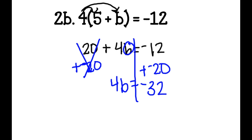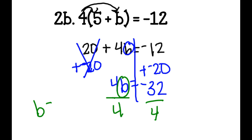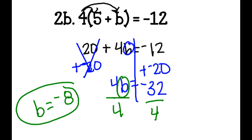To get the variable by itself, I divide both sides by 4. b equals negative 32 divided by 4, which is negative 8. I circle it, and that's my answer.